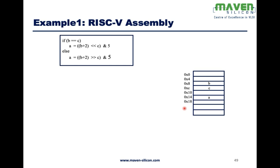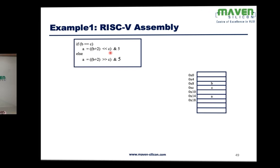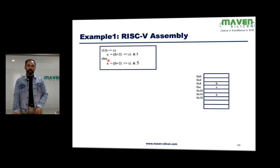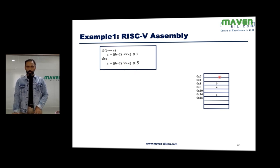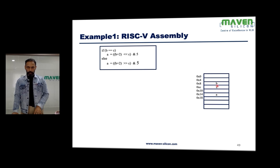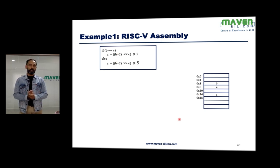Let us look at some examples of how we can write a RISC-V assembly program. The logic is: if b equals c, then a equals (b plus 2) left shift c, and phi. Otherwise, the only difference is it has to do right shift. The values a, b, c are available in memory. We are going to read the values b and c from memory, calculate the value a, and then write it back into memory.